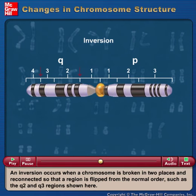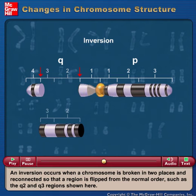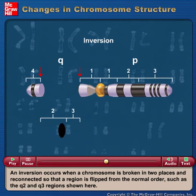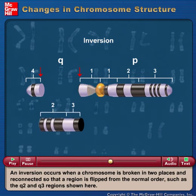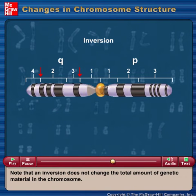An inversion occurs when a chromosome is broken in two places and reconnected so that a region is flipped from the normal order, such as the Q2 and Q3 regions shown here. Note that an inversion does not change the total amount of genetic material in the chromosome.